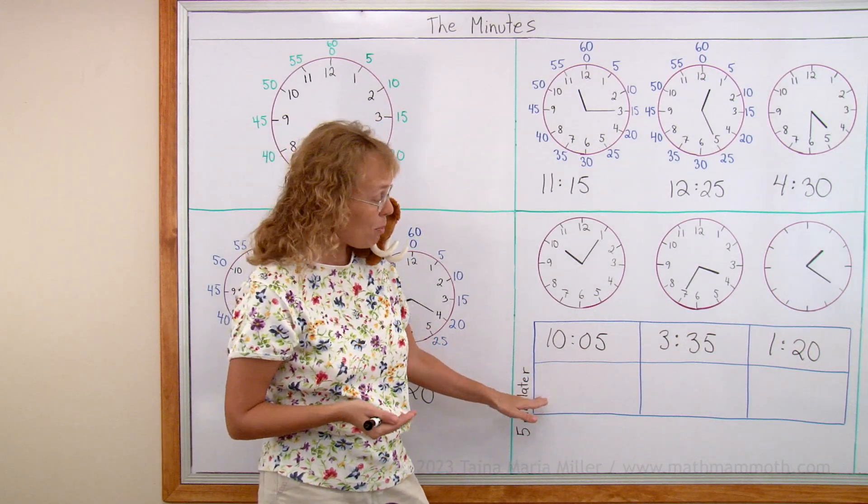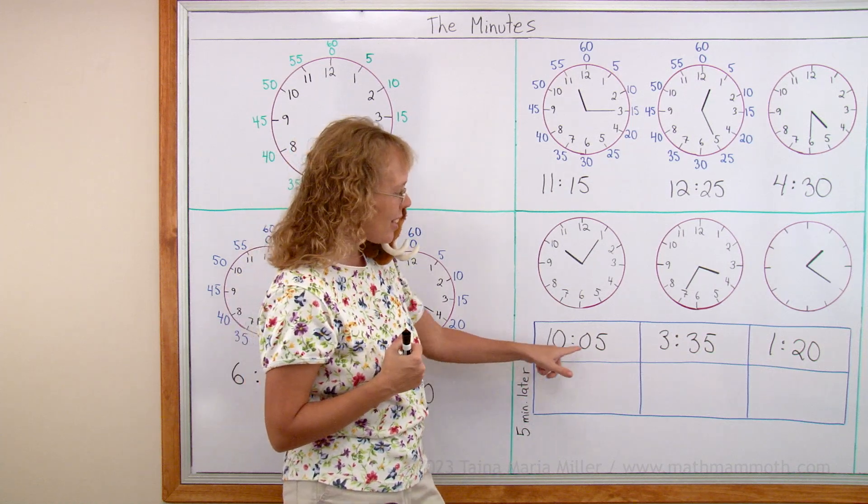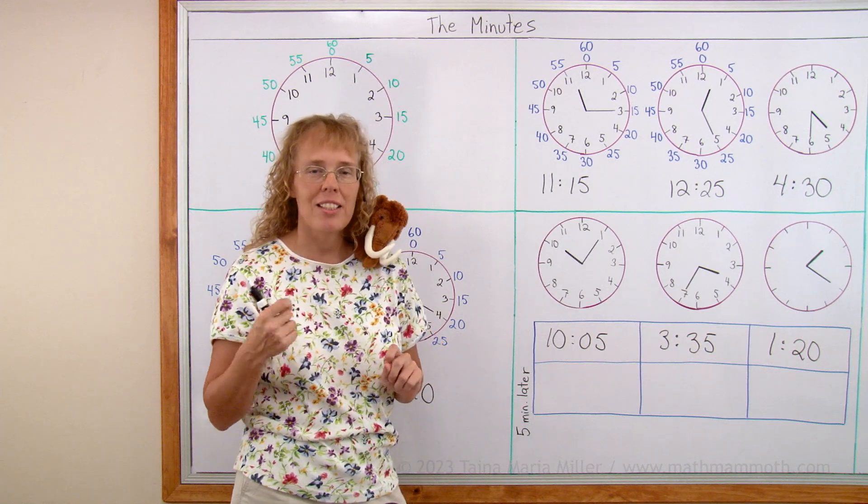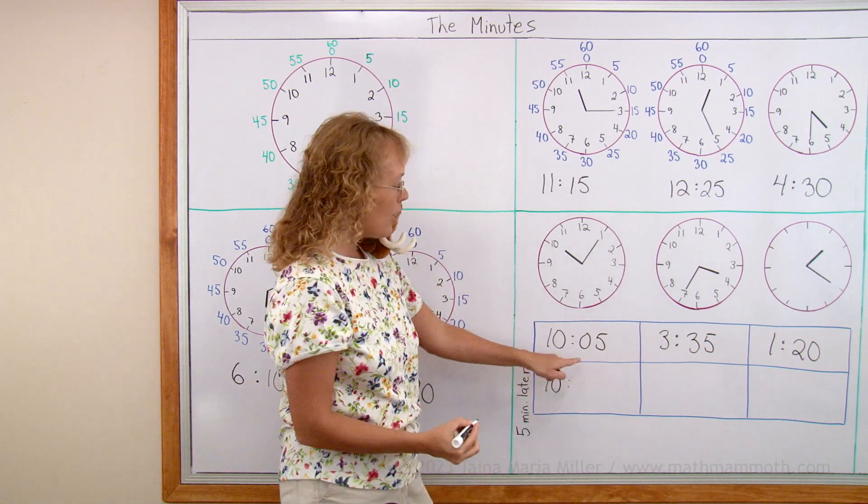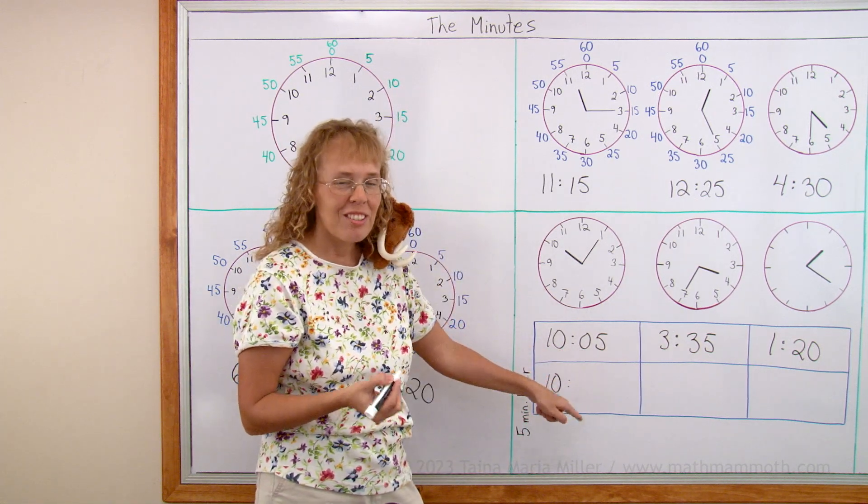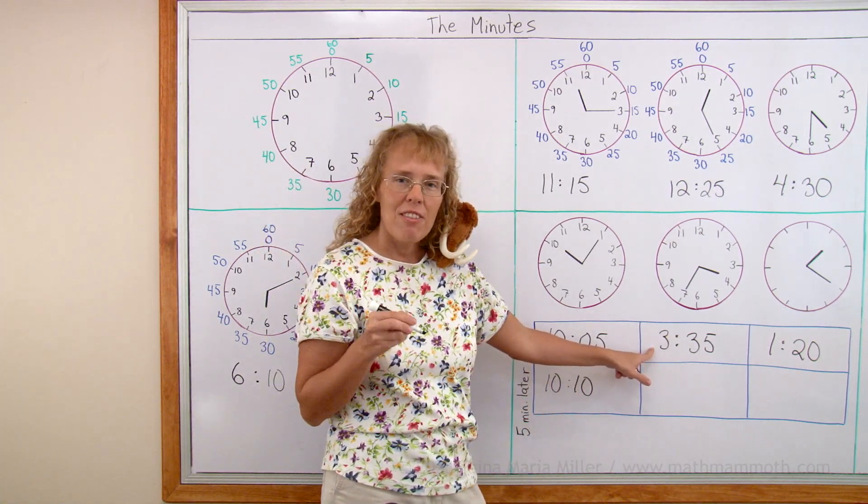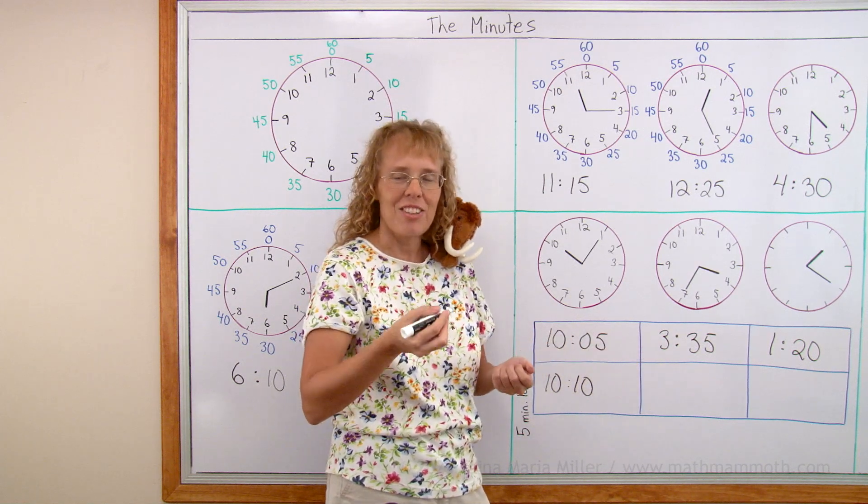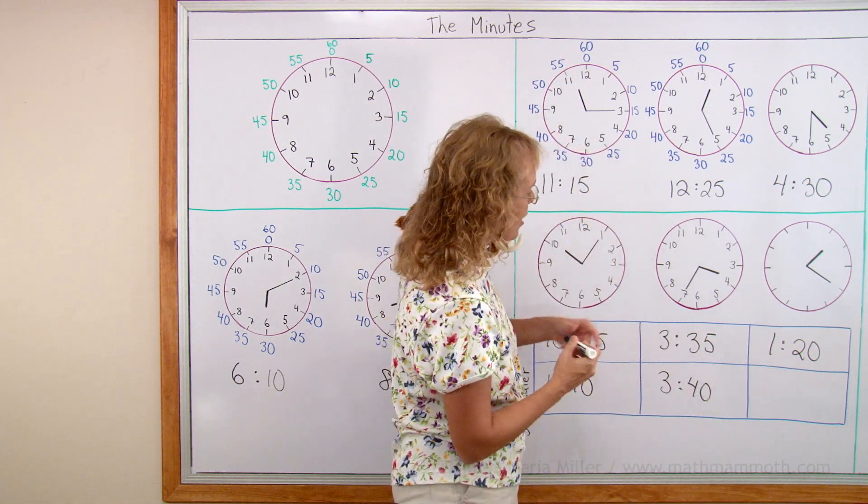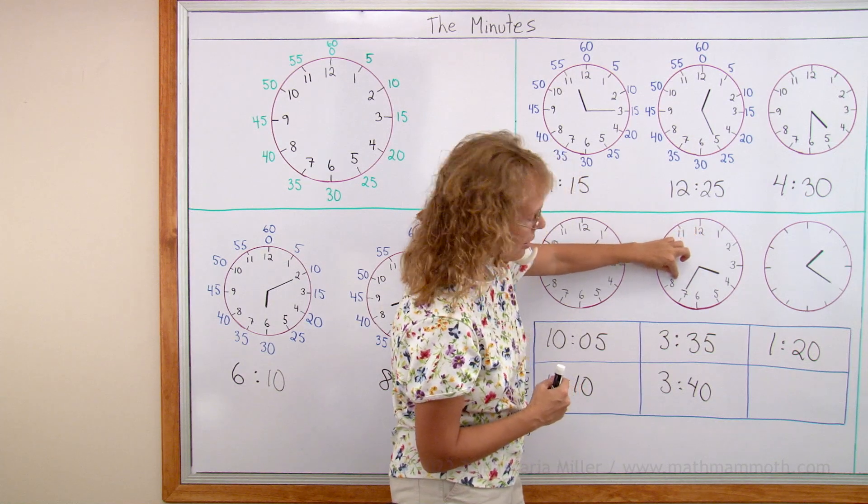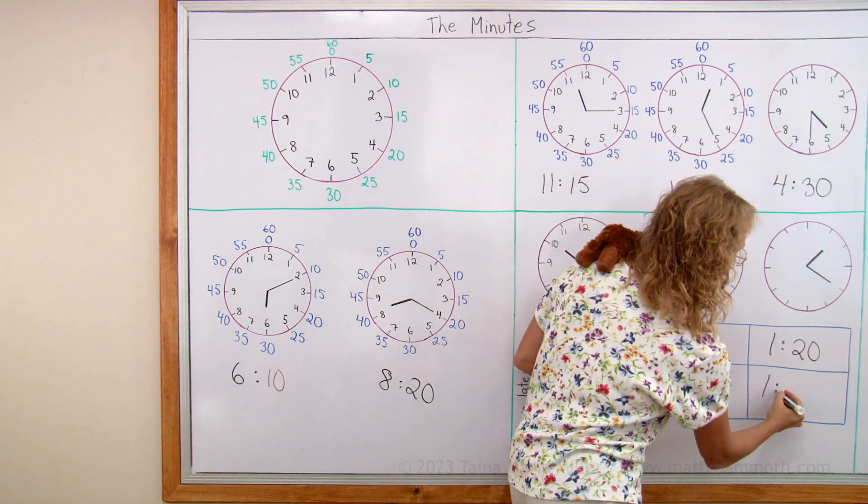And now here in the bottom row of this table. We are going to figure out the times 5 minutes later than these times. 5 minutes later than what the clock shows. And the hour is not going to change. But of course if you have 5 minutes here and 5 more. 5 plus 5 is 10. 3, 35 and 5 minutes later. You can simply add 35 and 5 more. So we will get 3 hours and 40. On the clock face the minute hand would have moved pointing here to 8. And over here 5 minutes later. 1:20 becomes 1 and 25.